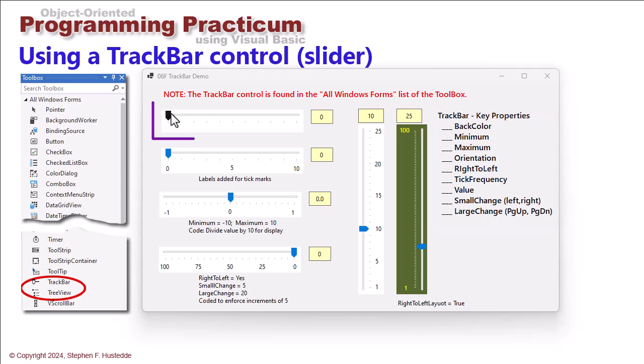Now the track bar by default doesn't show any values, so you'll usually want to have a label or a text box or some other textual container showing what that value is.